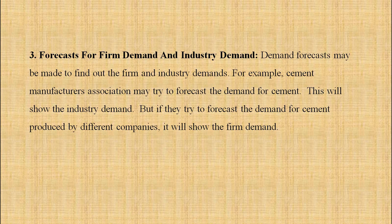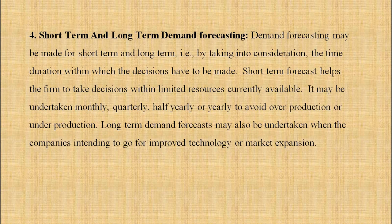Third, forecast for firm demand and industry demand. Demand forecast may be made to find out the firm and industry demand. For example, a cement manufacturers association may try to forecast the demand for cement — this will show the industry demand. If they try to forecast the demand for cement produced by different companies, it will show the firm demand.